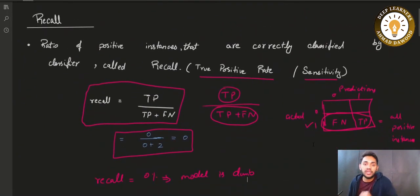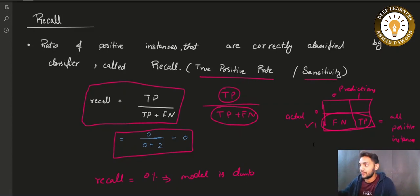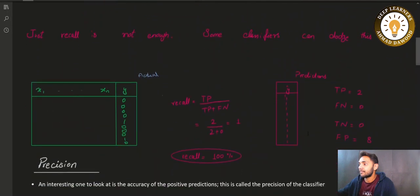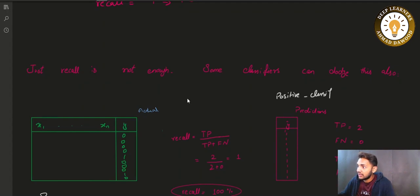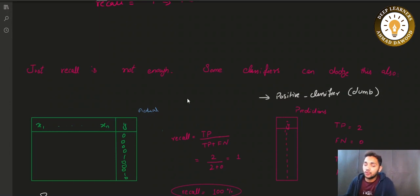But the story does not end here — recall is not always a good score. Consider a case where our model predicts all values as positive — a positive classifier. This is also a dumb model. Whichever sample you pass to that classifier, it will classify as the positive class. What will be the recall score when it classifies all samples as positive?